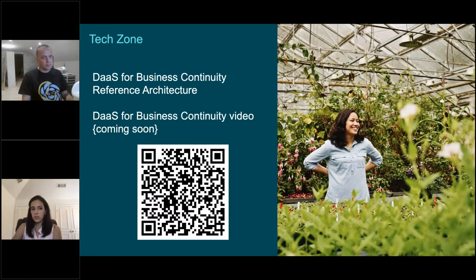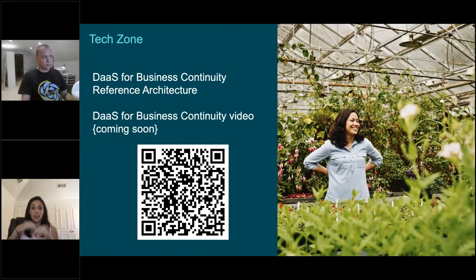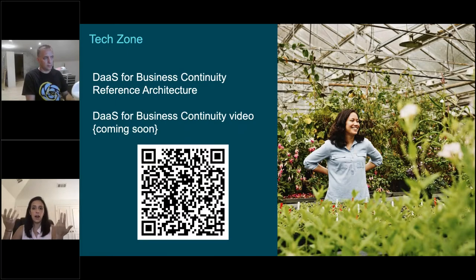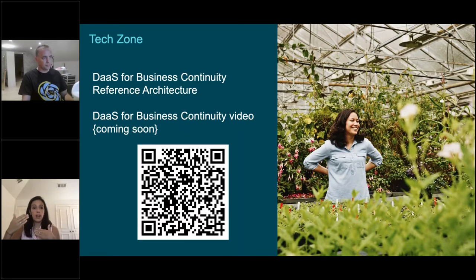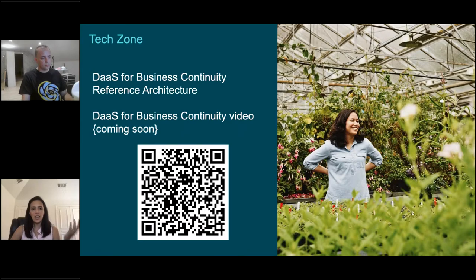On TechZone we have some really awesome resources. We recently started creating reference architectures that not only focus on a specific product but on a use case — for example, DaaS for business continuity — talking about all the different products you need in order to make that environment work. I actually authored the DaaS for business continuity reference architecture, which is why I'm here today to talk to you. Be sure to check that out. And coming soon, I'm going to have a DaaS for business continuity video come out — these videos are usually two to three minutes in length, very short. They explain quickly what the use case is and how Citrix fits in — great for sharing with upper management who may not have time to sit through a 45-minute to one-hour recording.